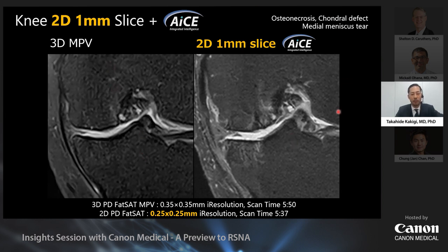The right side is a 1mm 2D fast saturated proton density weighted image with ACE. Previously, a 1mm 2D image would be challenging, but ACE makes it even possible.